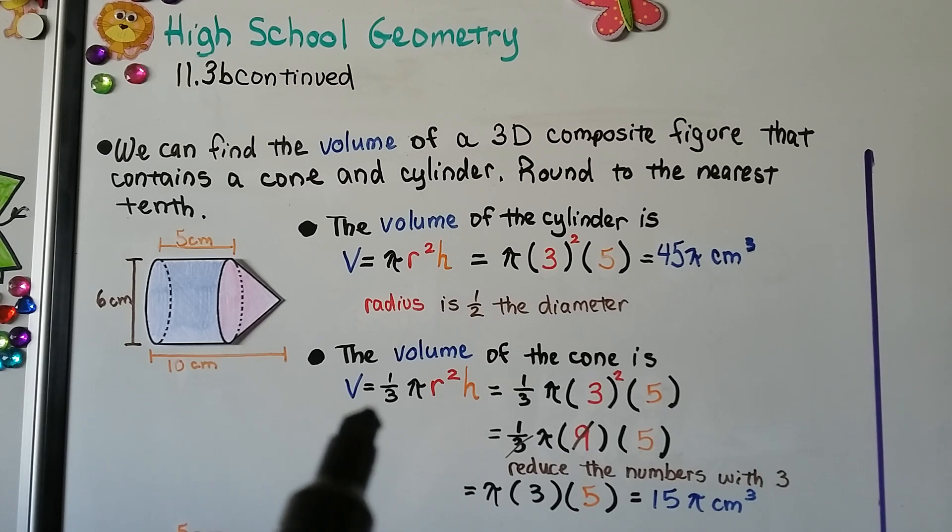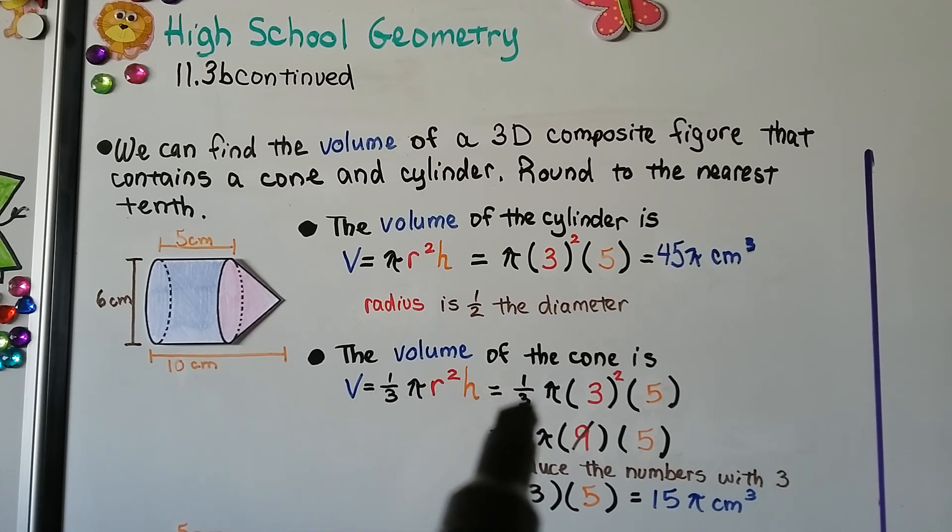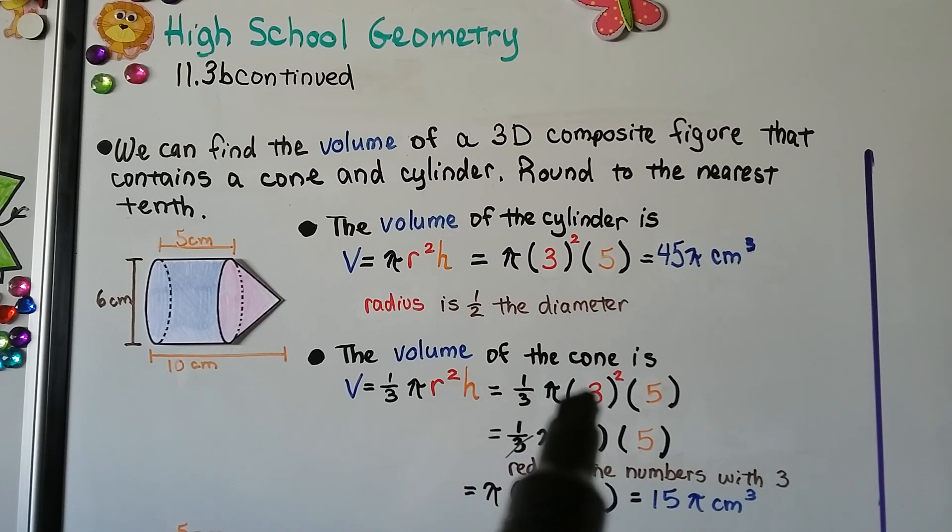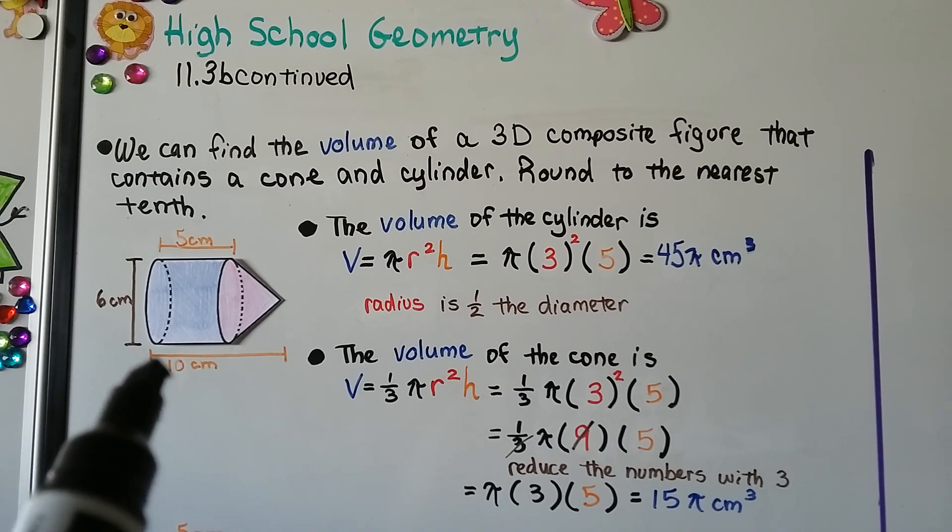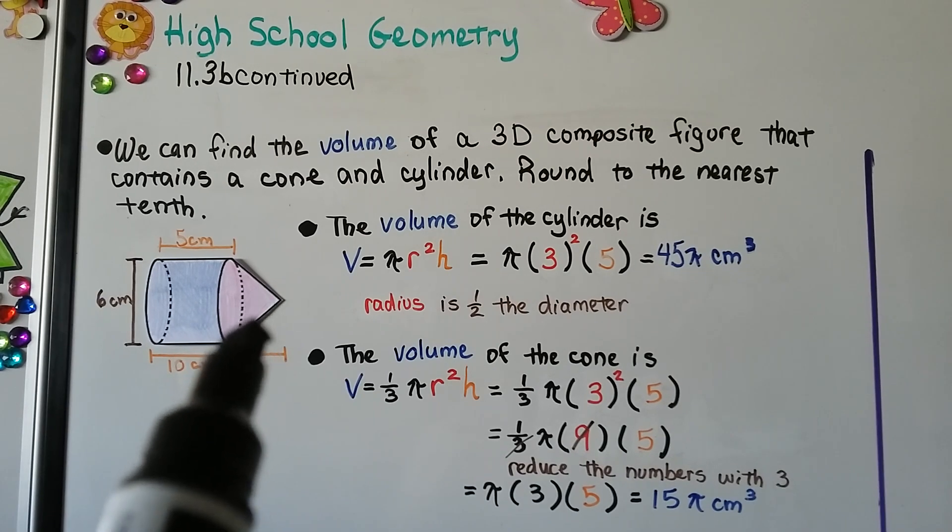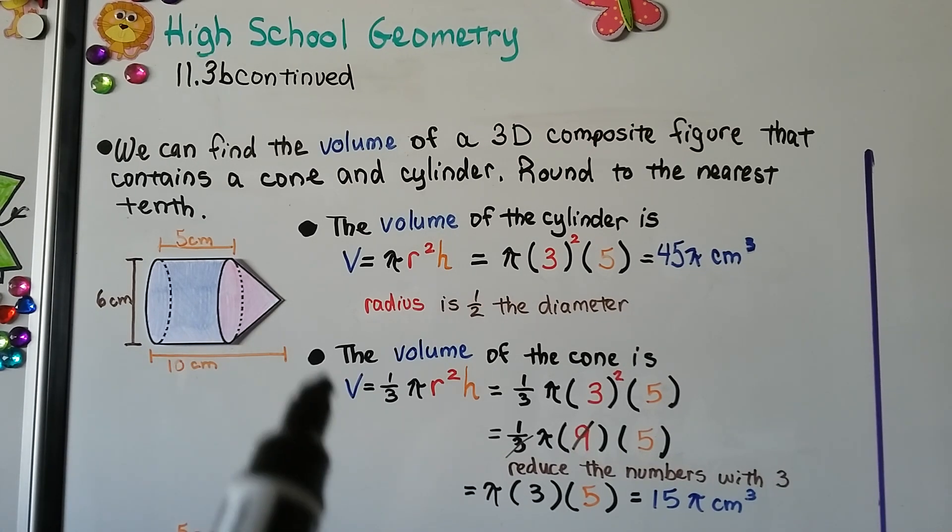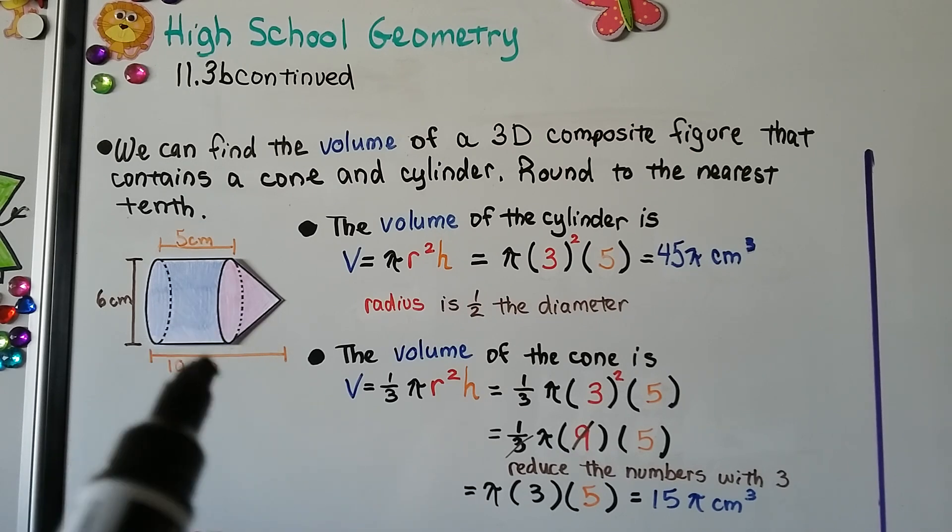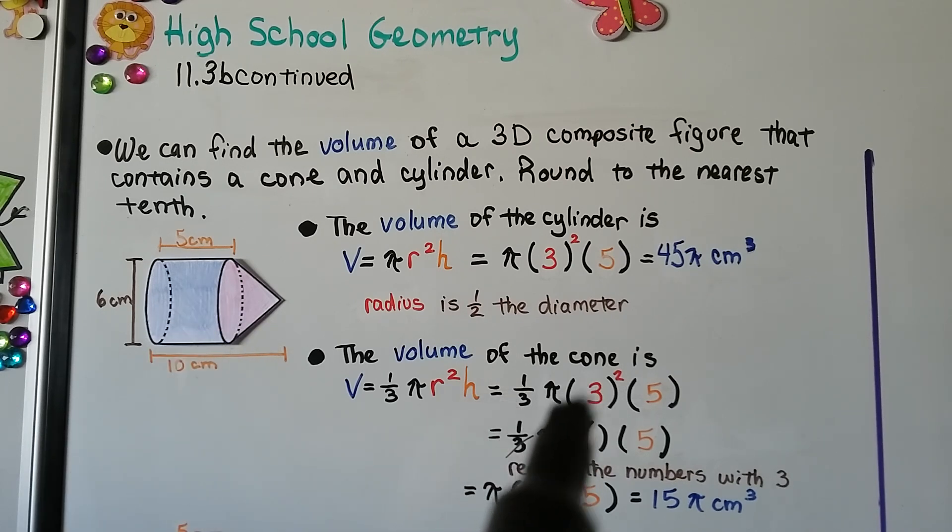Now we can do the cone. For the radius squared, we'd have 3 squared again because it's got the same radius as the cylinder. And if this is 10 centimeters and this is 5 centimeters, then this must be 5 centimeters to make it 10. My drawing is not in proportion, but using these numbers, we would have 3 squared times 5, which would be 9 times 5. We can cancel out this 3 and that 9. There's 3 threes in a 9. So now we just have π times 3 times 5, which is 15π centimeters cubed.